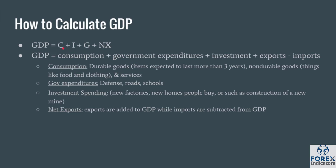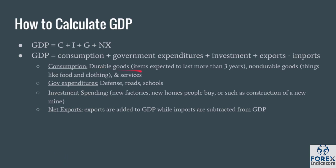GDP equals C plus I plus G plus NX. Breaking that down: C stands for consumption, I stands for investment, G stands for government expenditures, and NX is net exports — that is exports minus imports. Consumption includes things such as durable goods, which are items expected to last more than three years, as well as non-durable goods such as food and clothing, and services are also included in consumption, things such as car washes, tutoring services, and dog walks.